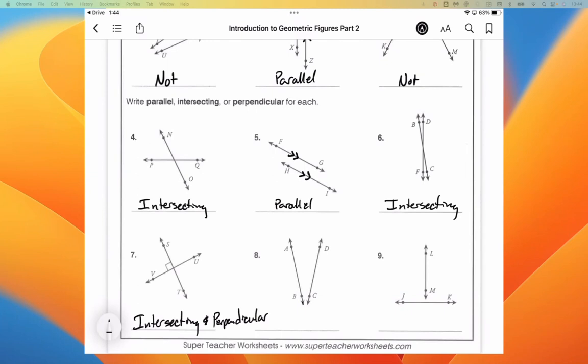For number eight, we sort of have to extend the drawing to see what's going to happen here. Those lines are in fact going to intersect if we extend them, and so we would call that intersecting. Now you may be thinking, but mister, in the original drawing, they weren't intersecting. That's right, but those are lines, and they continue on forever. So we can continue the line past the end of the arrow because that's what the arrow indicates - that the line continues going forever.